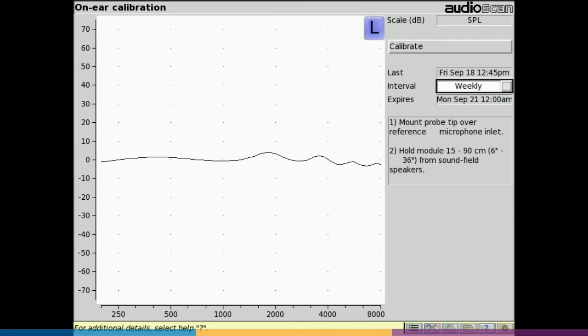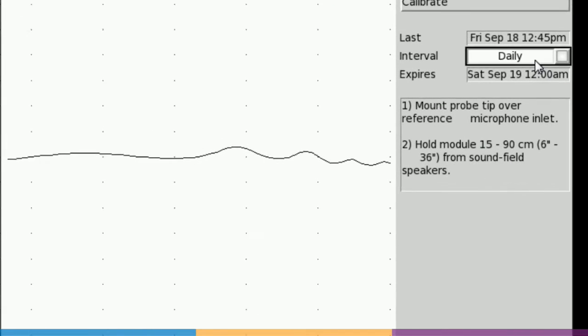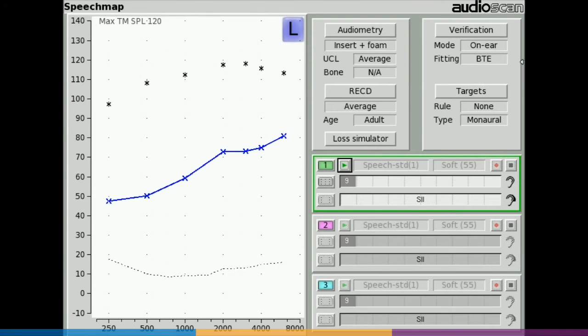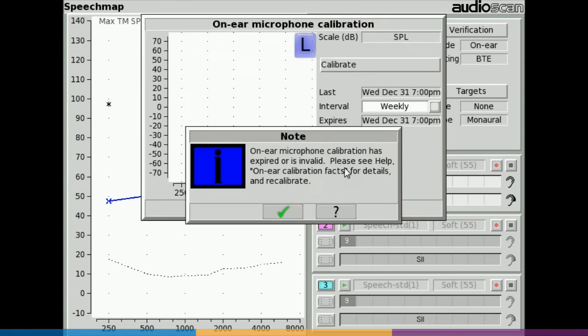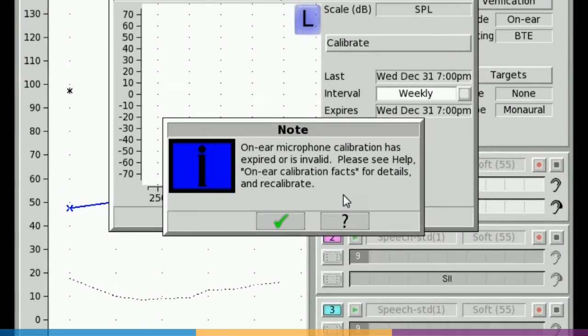Calibration can be performed as often as desired but will expire at 12 a.m. the following day or 12 a.m. the following Monday, depending on the choice of daily or weekly calibration interval. After the calibration has expired, you'll be prompted to calibrate whenever you attempt a test that uses the on-ear measurement microphones.